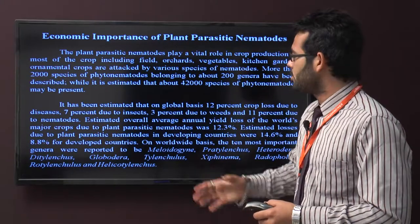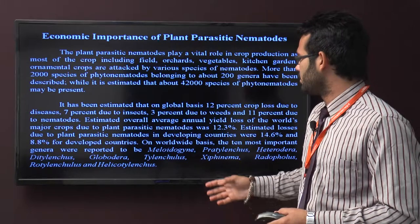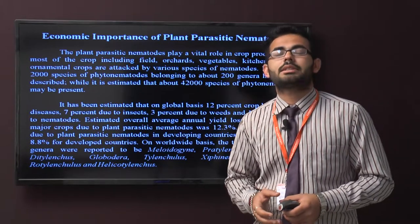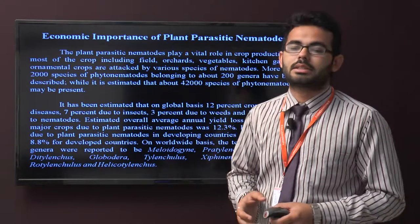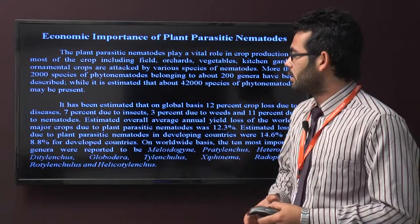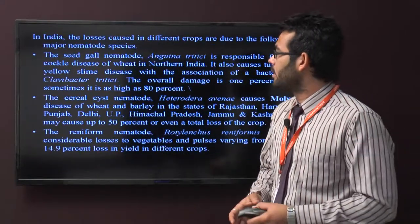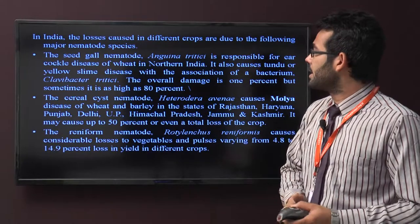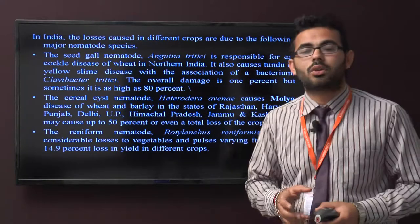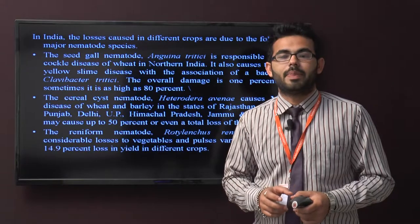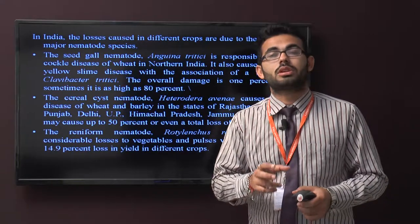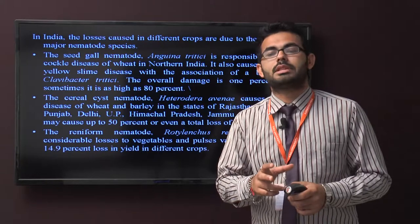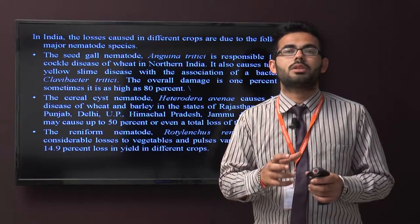The estimated loss due to plant parasitic nematodes in developing countries is 40.6% and 8.8% in developed countries. Some important nematodes include Meloidogyne, Pratylenchus, Heterodera, Ditylenchus, Globodera, Trichodorus, Xiphinema, etc. In India, the seed gall nematode Anguina tritici is responsible for the Ear Cockle disease in northern India. It also causes the Tundu or yellow slime disease associated with bacteria.